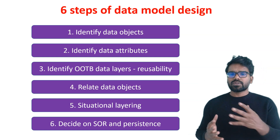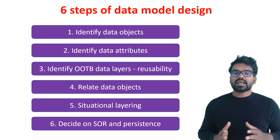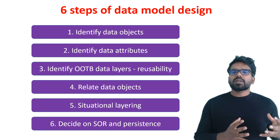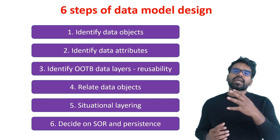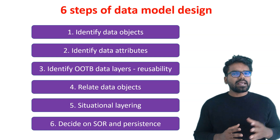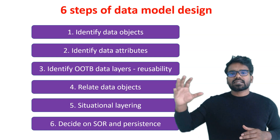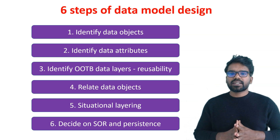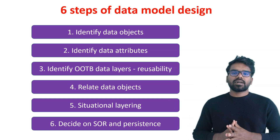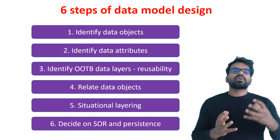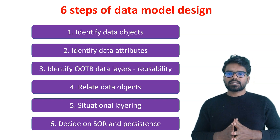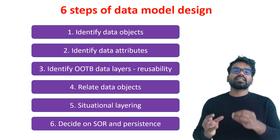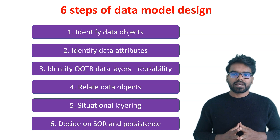When you want to design the data model for any Pega application, I recommend you to follow six steps. The first one is identify the data objects. For any Pega application, you can easily pick what can be the data objects. For the client's request, customer can be a data object, Policy can be a data object, Approver also can be a data object. Your business analyst can also help you with identifying the right data objects for your application.